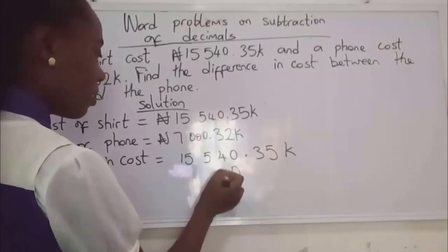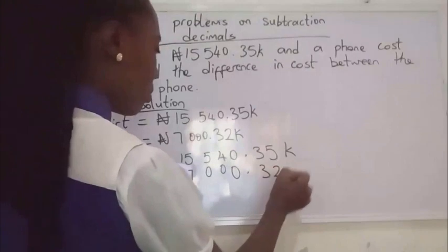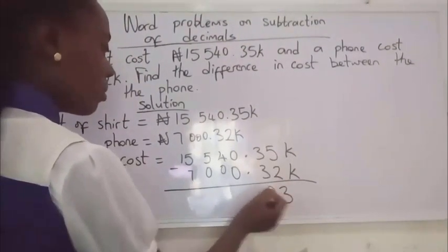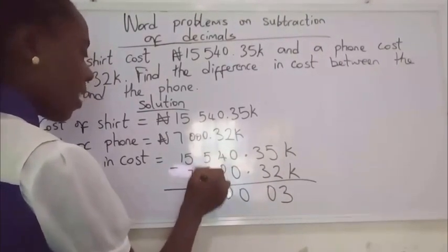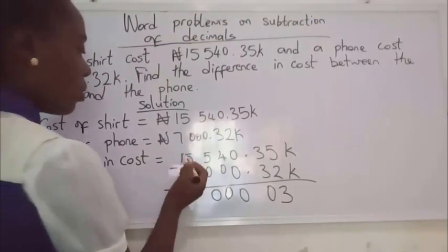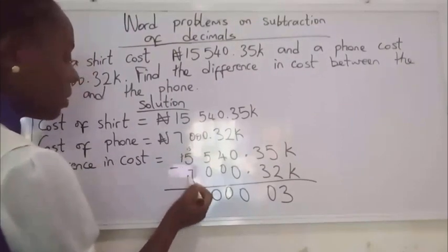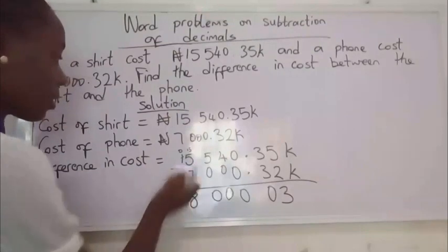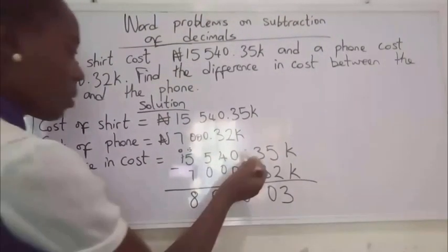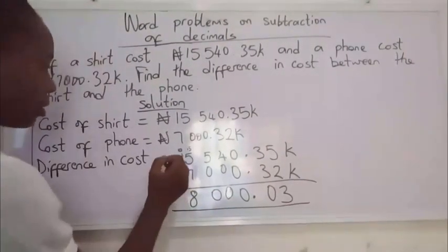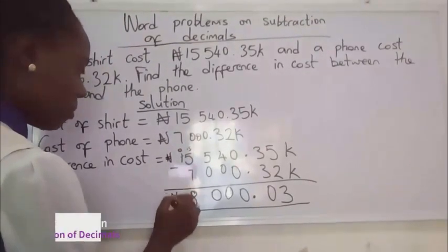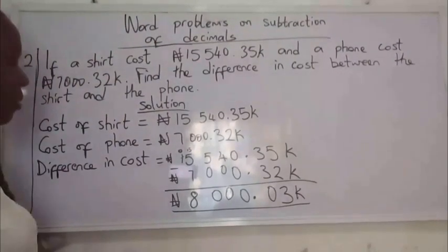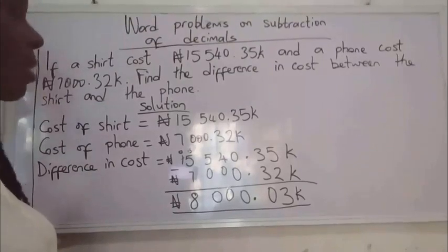You pick the number in front of the decimal first. Five minus two is three, three minus three is zero, zero minus zero is zero, four minus zero is four, five minus seven cannot happen so we borrow one — fifteen minus seven is eight. When you take one away from one we have zero. The difference in cost between the shirt and the phone is eight thousand and three kobo.